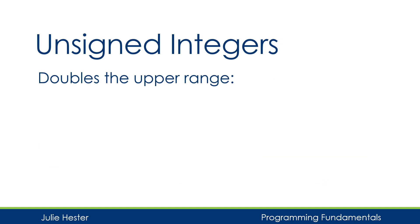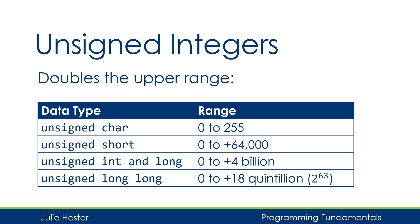If we want to further extend the upper range of numbers, we can use unsigned data types. With these data types, we're no longer using a bit to store whether a number is positive or negative, so now we can have an upper range that's twice as big. The data types have the same names but the word unsigned is in front. You can't put negative numbers in the data type; instead the range begins with zero and the top end is double what it had been when it was a signed number. With an unsigned int you can use a value of up to about 4 billion, or you can move to unsigned long long if that's not going to be big enough.